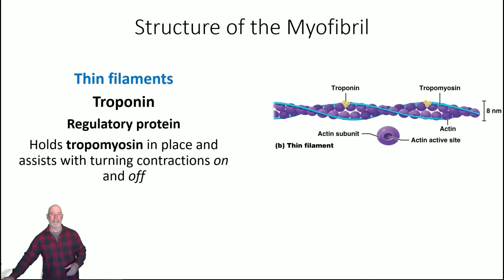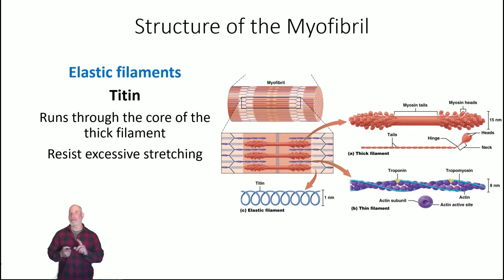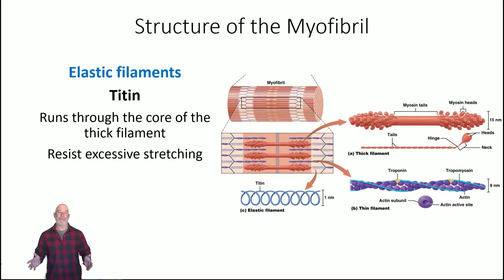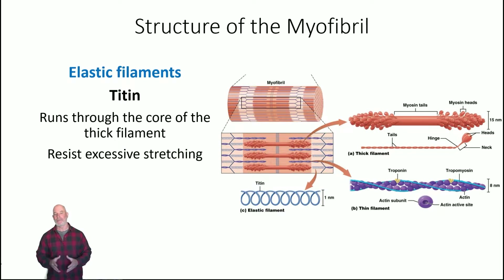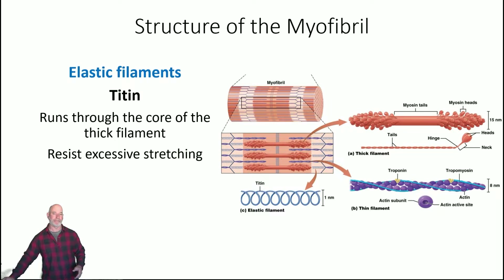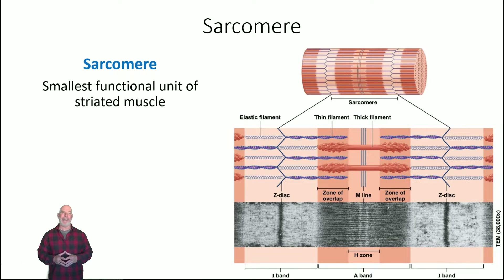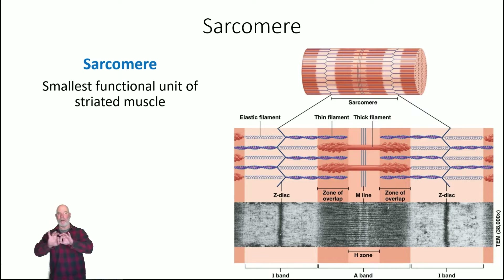The elastic filament includes a protein called titin, which gets its name because it's enormous — in fact it's one of the largest proteins we've ever seen. Titin connects to a place called the Z-line and runs to the core of a thick filament, and it resists excessive stretching of the muscle.